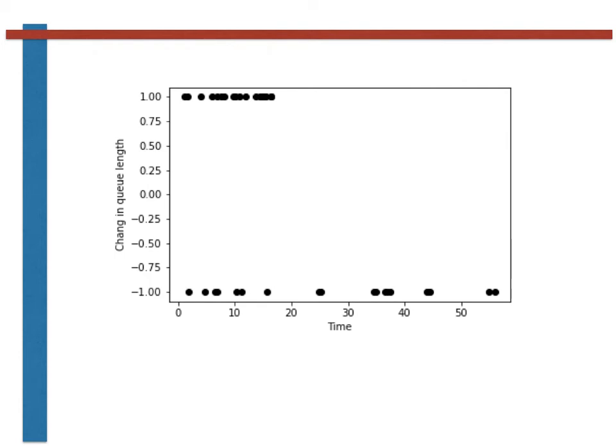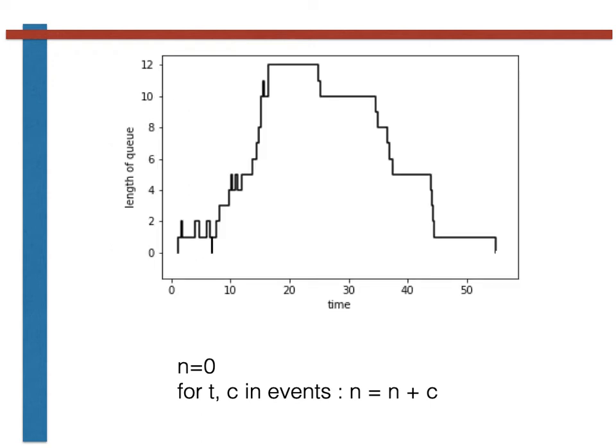The graph of the array called events that was generated on the previous slide is shown again here. We can generate a graph of the length of the queue as a function of time by using the code shown here. This code works because the array called events is in time order. If we thus add the change in length to an accumulator variable called n, we can thus obtain information about the length of the queue as a function of time. With a little more code, which I will leave you to work out as an exercise, you can thus generate a graph showing the length of the queue as a function of time. A graph like this is shown at the top of this slide.